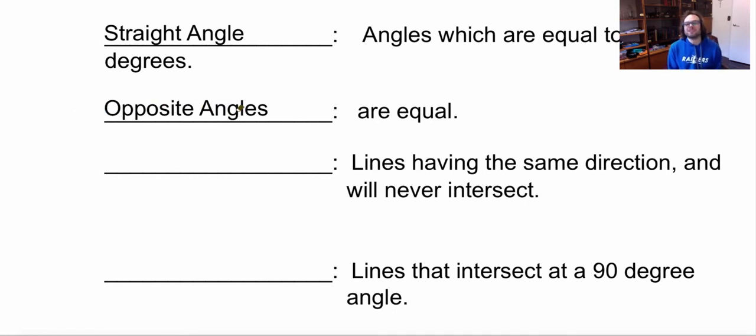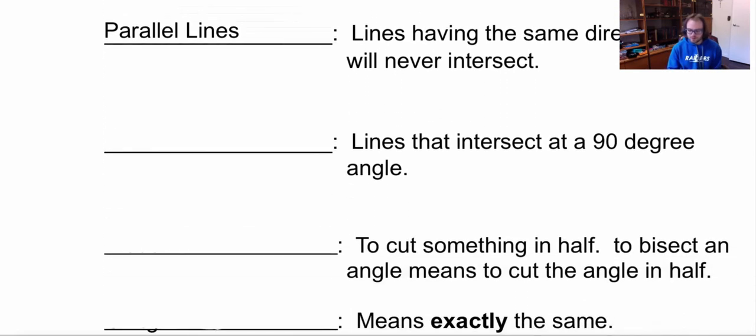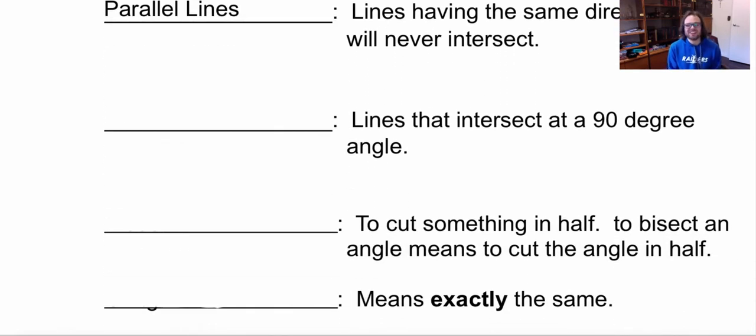Next is lines having the same direction will never intersect. So if lines have the same direction never intersect what's that called? Think of railway tracks and stuff like that. Those are going to be parallel lines. Then we're going to have lines that intersect at a 90 degree angle. Those are called so if something intersects at 90 degree angle starts with a P it is perpendicular. They are perpendicular lines.